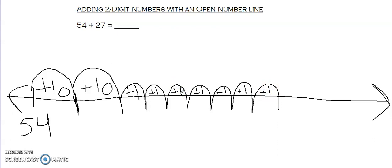Okay so now that I've shown 54 is where I'm starting and 27 as tens and ones jumps I'm going to count up my jumps. So we have 54 plus 10 is 64. 64 plus 10 is 74.